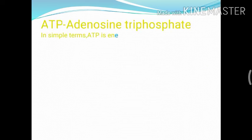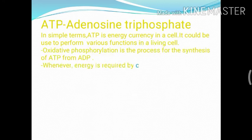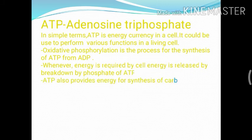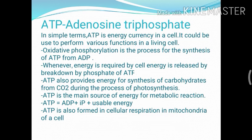ATP means Adenosine Triphosphate. ATP is defined as the energy currency of the cell, meaning the role of ATP is very important in a cell and a number of functions are performed by ATP. The process of synthesis of ATP from ADP is known as oxidative phosphorylation.